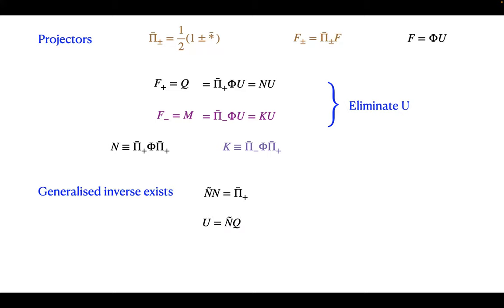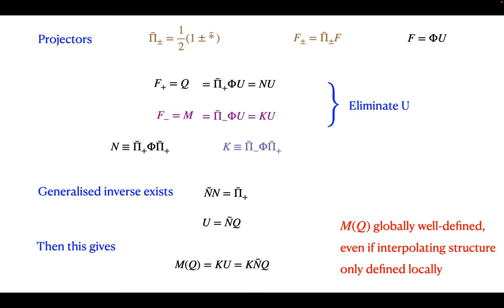The key is to introduce a generalized inverse—something which, acting on N, gives the projector. In the paper I show that such an inverse always exists. We can invert the relation Q = NU to give U = Ñ Q (the generalized inverse acting on Q), and substituting this gives M explicitly. Crucially, M(Q) is globally well-defined even if the interpolating structure φ that played a role in the intermediate stages is only defined locally. The full analysis is given in detail in the paper.